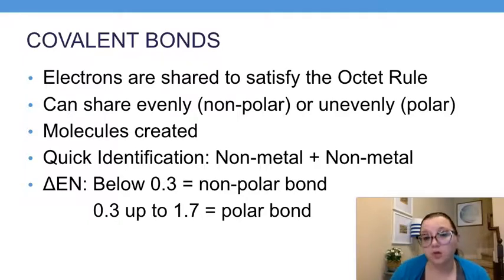When that sharing occurs, it can either do so evenly or unevenly. If the sharing is even, that means one element is not really pulling any more strongly than the other - they're pulling equally. We would say it's nonpolar, that there's not different pulls or different sides to the molecule. If the pulling is uneven, where one is pulling quite a bit more than the other but not enough to rip it off and become ionic, then we would say it's a polar covalent bond.